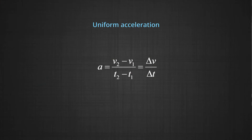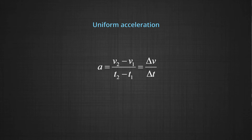Uniform acceleration can be calculated as represented by A. It is given by the ratio of change in velocity divided by the time interval. So A equals V-final minus V-initial divided by the time interval, or it can be written as V(T2) minus V(T1) divided by T2 minus T1.